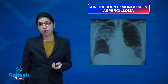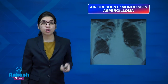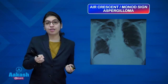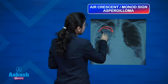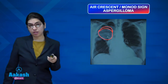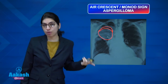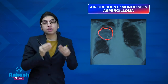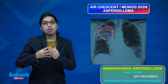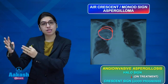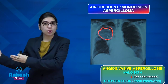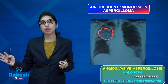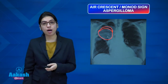When angioinvasive aspergillosis patients are treated with voriconazole and respond well, the nodule retracts to form an air crescent. Air crescent can be seen in two important situations: aspergilloma — a fungal ball in a pre-existing cavity with a crescent of air above it, called a monod sign — and in treated angioinvasive aspergillosis where the retracting nodule produces the air crescent, which is a good prognostic sign indicating response to treatment.